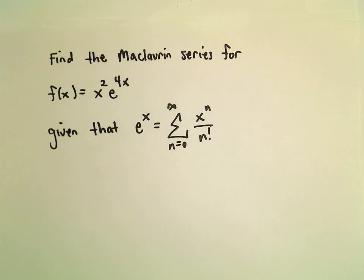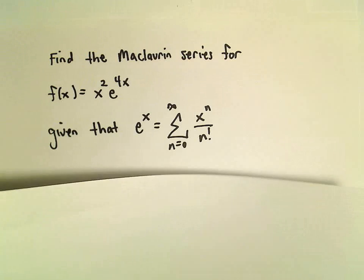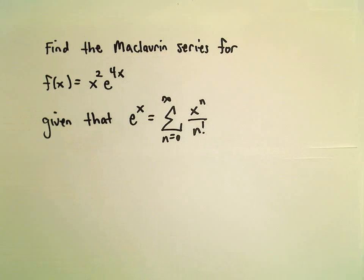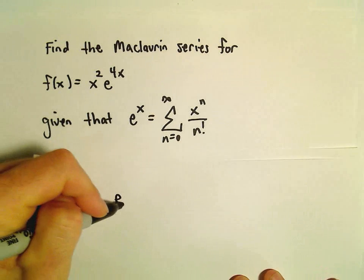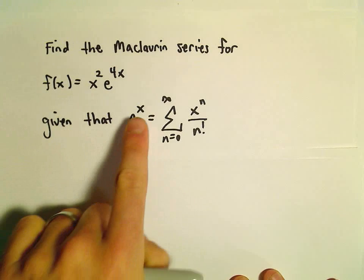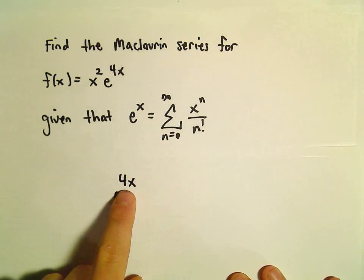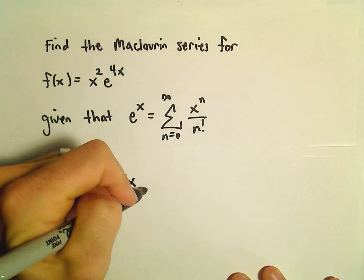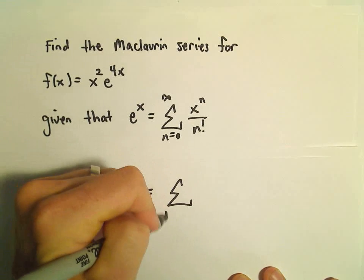So the first thing I'm going to do is find a series expansion for e to the 4x. But to do that again, all I have to do, notice all I've done is replace the x with 4x, so I'm going to do that in the series expansion as well.